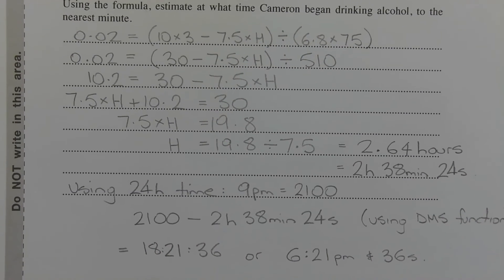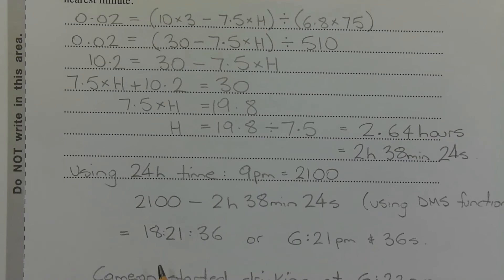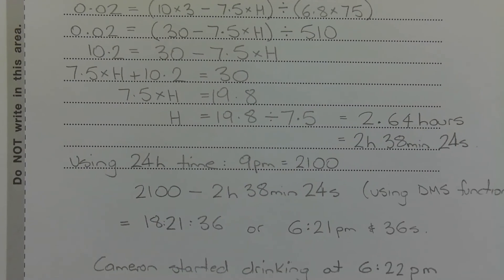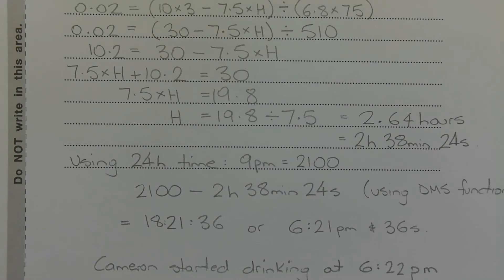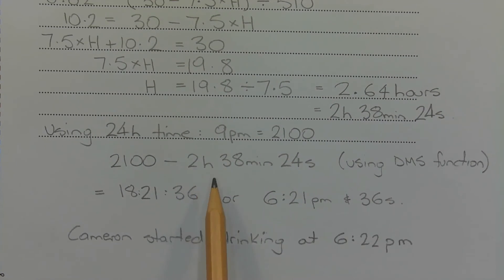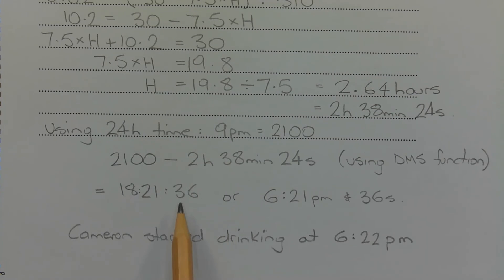To subtract 2 hours 38 minutes 24 seconds from 9 p.m. to find the start time, I've converted 9 p.m. to 24-hour time: 9 p.m. is 2100 hours. Using the degrees-minutes-seconds button on the calculator, 2100 minus 2 hours 38 minutes 24 seconds equals 18:21:36 — so 18 hours 21 minutes 36 seconds, which in 12-hour time is 6:21 p.m. and 36 seconds.